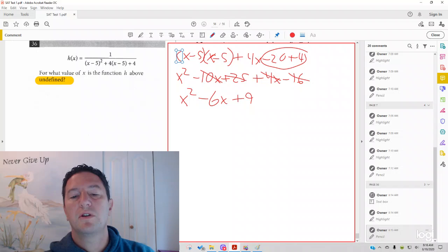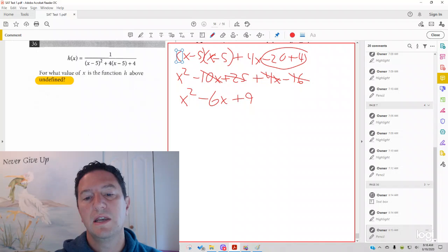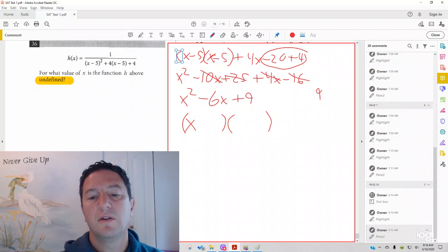And now I need two numbers that are going to multiply to give me a positive 9 and add to give me a negative 6. So, if you're not sure of this, and there is a bit of a shortcut here. But if you're not sure of this, you put the 9 over here. You should know you have your x and your x. You should know when you multiply to get a positive, add to get a negative, it's got to be negative, negative.